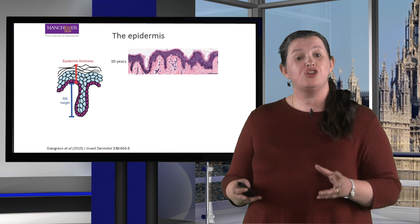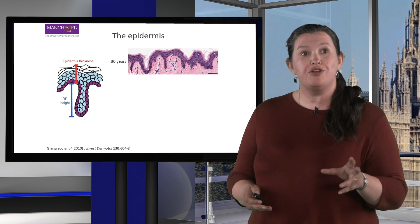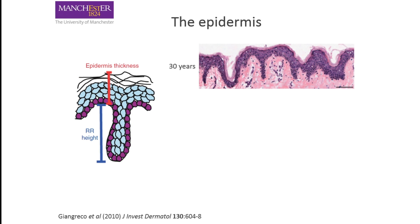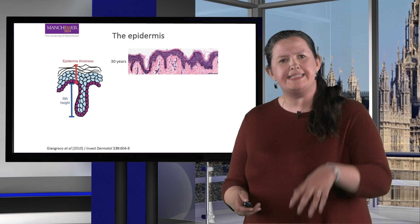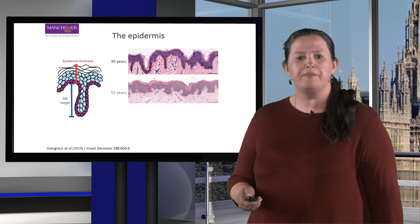As we age, our skin starts to change. We can measure various parameters — epidermal thickness, denoted by the red line, and the level by which the epidermis moves into the dermis to give skin adhesion; these are called reti ridges. This first histological sample shows skin of a 30-year-old, with lots of undulation of the epidermis going deep into the dermal tissue.